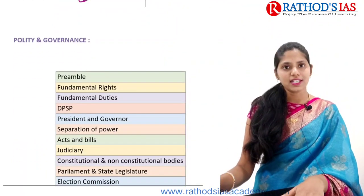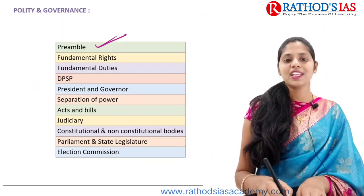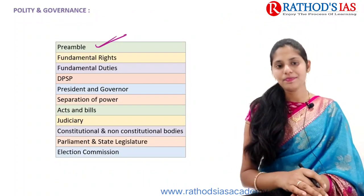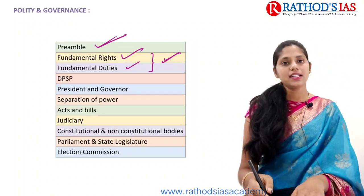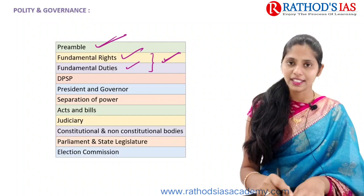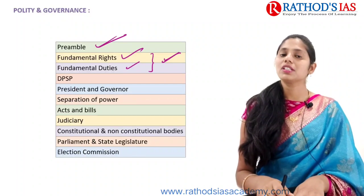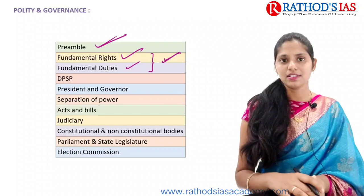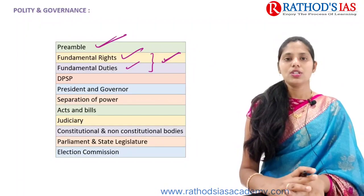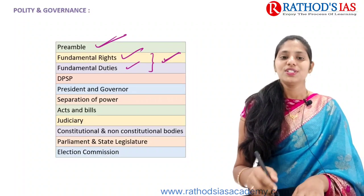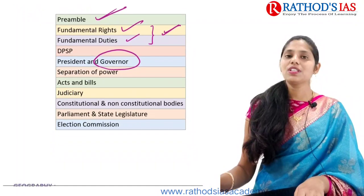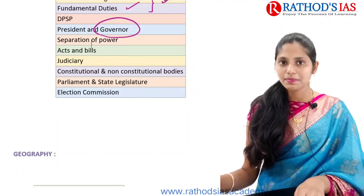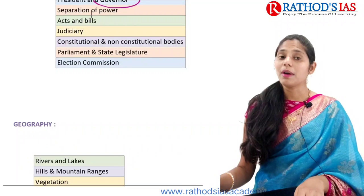Now let us see the core areas of Polity and Governance. First is the Preamble — last year also there was one question from the Preamble in 2021 prelims, so don't skip it. Next are Fundamental Rights and Fundamental Duties — currently they are highly in the news because of some controversial statements by our Prime Minister. So you can expect a question from Fundamental Rights, Fundamental Duties, and the DPSP — Directive Principles of State Policy. You also need to know about the President and Governor. Recently the role of the Governor is also highly in the news. And Separation of Powers.